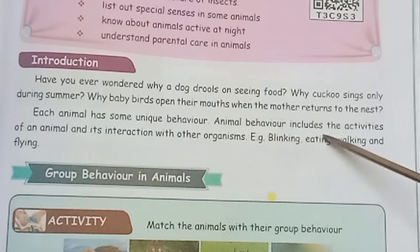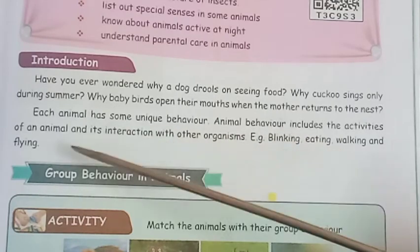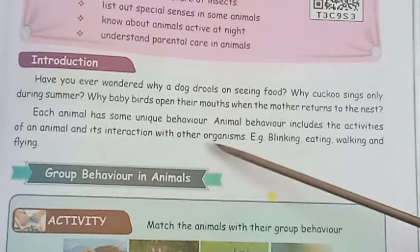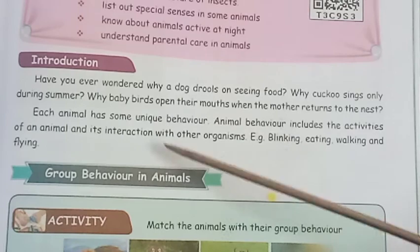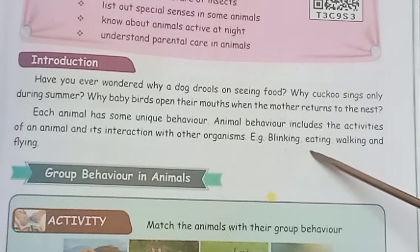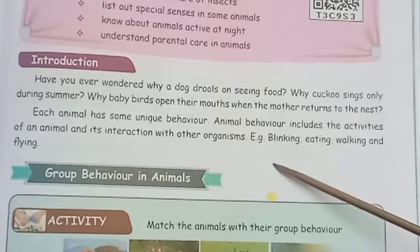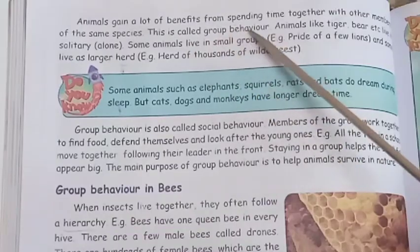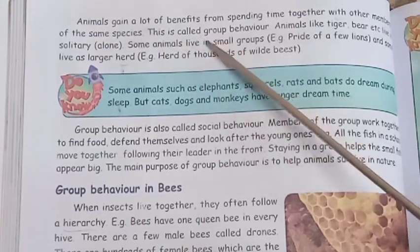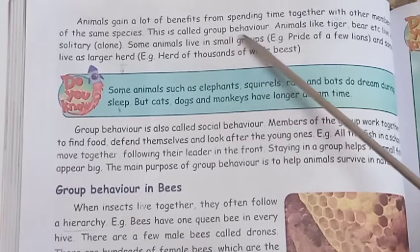Animal behavior includes all the activities of an animal. For example, blinking, eating, walking, and flying. Animals get a lot of benefits from spending time together with other members of the same species. This is called group behavior.